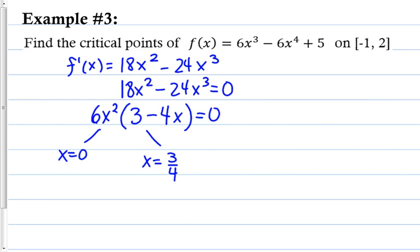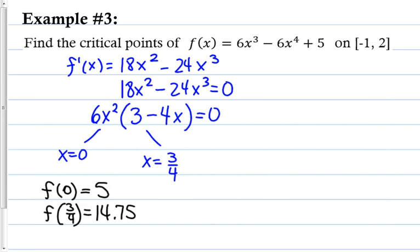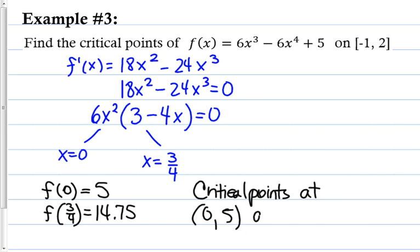Now I need the actual y values. Plug x = 0 into the original function: 0 - 0 + 5 = 5. That was easy. Then plug in x = 3/4 into the original function — with the help of a calculator, I get 14.75. So the critical points are at (0, 5) and (3/4, 14.75).